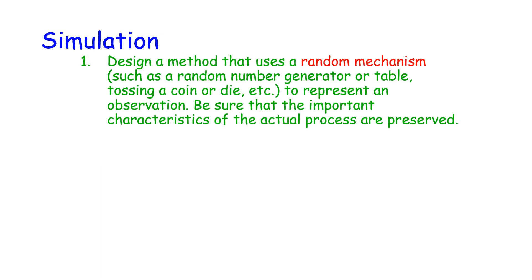First, you're going to design a method that uses a random mechanism, such as a random number generator, a table, tossing a coin or a die — something like that — to represent an observation. You want to be sure that the important characteristics of the actual process are preserved.